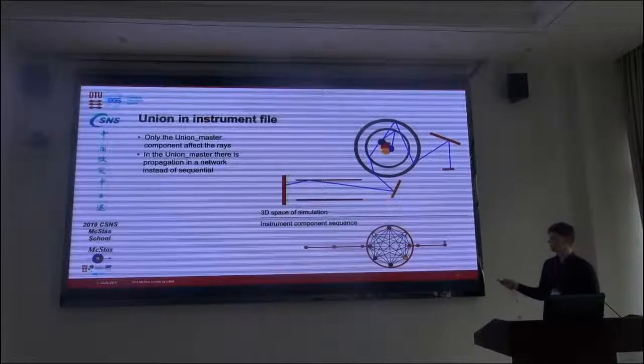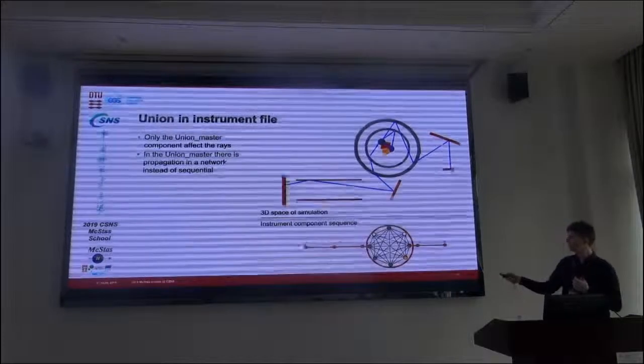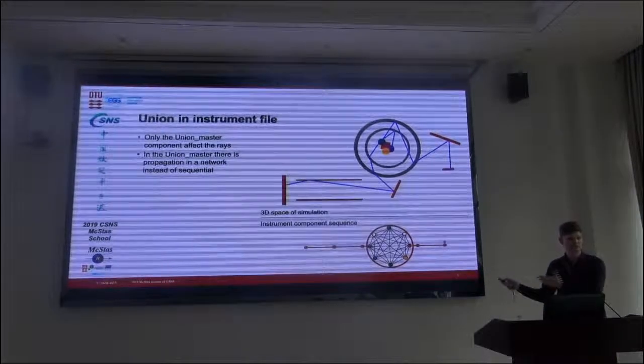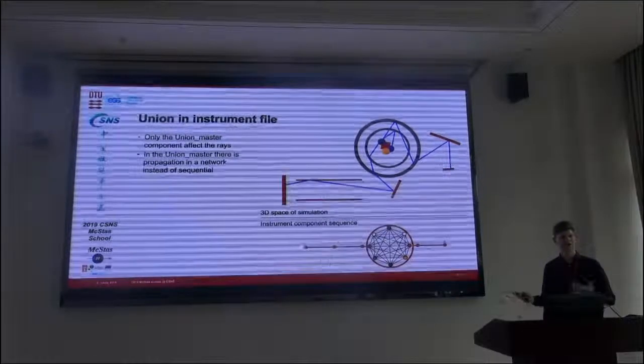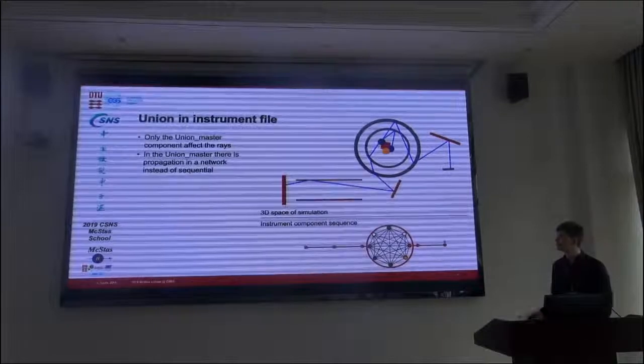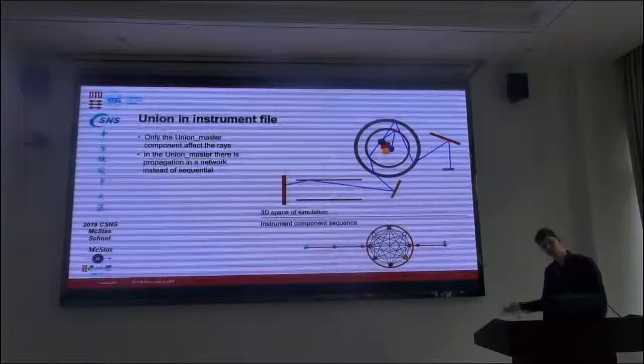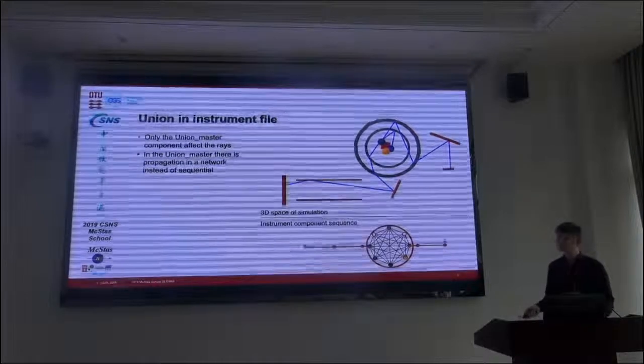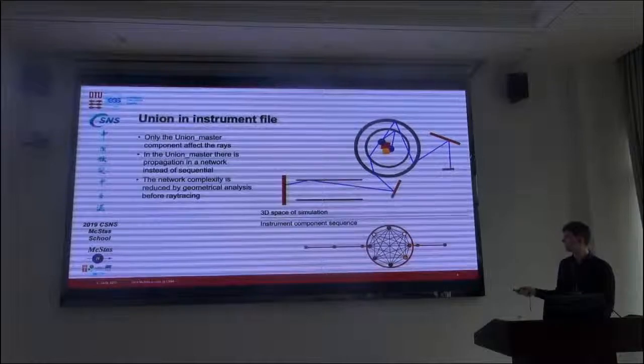Of course, it would take a long time to check all of these intersections. Each of these lines correspond to a check of intersection for every single step of the neutron. So what is done is that this geometry is analyzed before the actual trace happens, and then the unnecessary connections are removed.